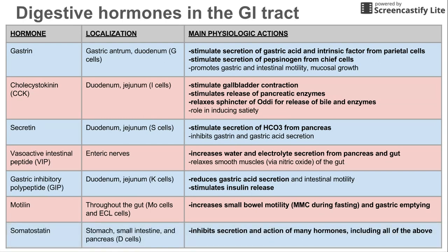Finally, there's somatostatin, which comes from the pancreas, small intestine, and the stomach, and this comes from D cells. Somatostatin is the primary inhibitor of the action of many of the hormones, including everything we talked about today — the first six on this list are all inhibited by somatostatin. This has been a list of digestive hormones in the GI tract, and I hope this was helpful.